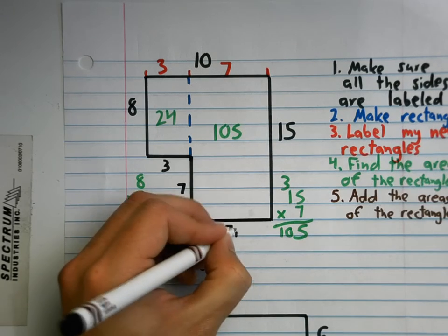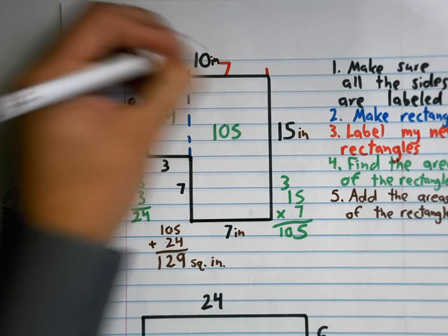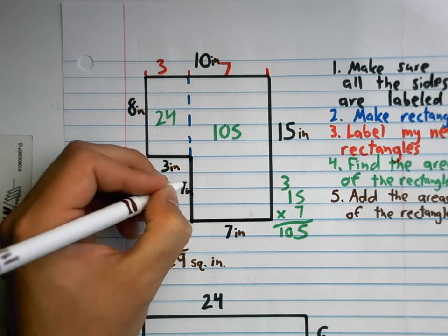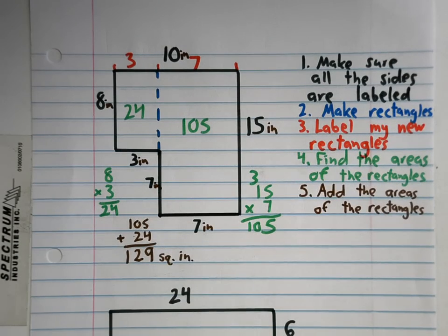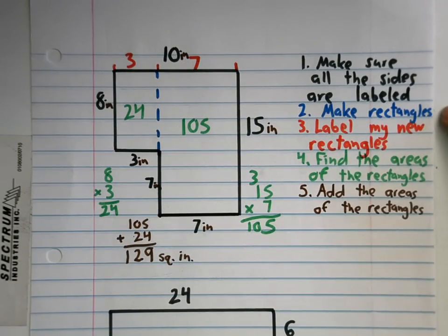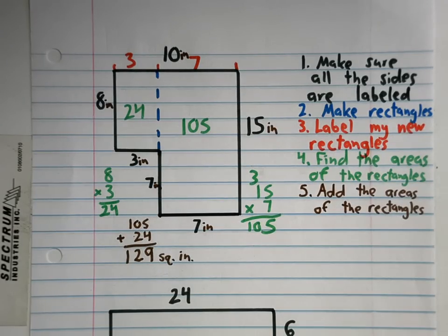I'll put inches on each of these so we know it's square inches. Question? Can you move it over so I can see? So remember the five steps we have to do. Make sure all the sides are labeled. Make rectangles out of it. Label my new rectangles. Find the areas of those rectangles. And add the areas of the rectangles together.